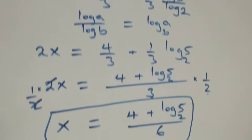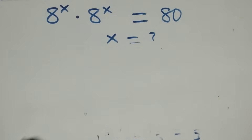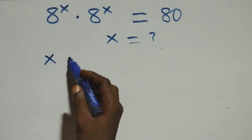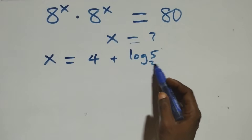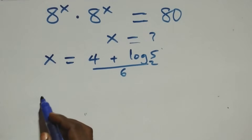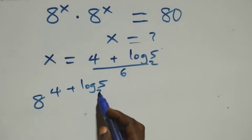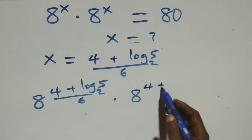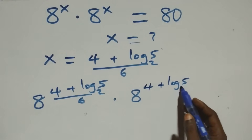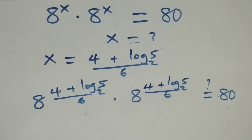Let's check if this satisfies the given problem. We substitute the value of x, which is x equals 4 plus log 5 base 2 all over 6. What we have becomes 8 raised to power 4 plus log 5 base 2 all over 6, times 8 raised to power 4 plus log 5 base 2 all over 6, equals 80.